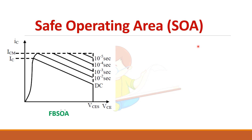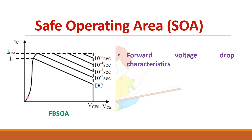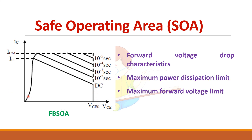The Safe Operating Area (SOA) defines the limits under which the device can be operated safely. The IGBT has two safe operating areas: one under forward bias and one under reverse bias conditions. The forward bias SOA has three limits: a forward voltage drop limit, a power dissipation limit, and a voltage limit. The forward voltage drop limit is given by the on-state resistance of the device. For lower pulse widths, a larger operating region is permissible.